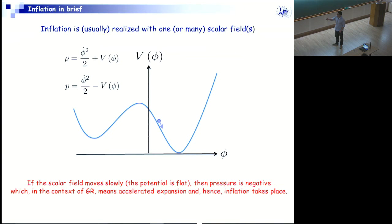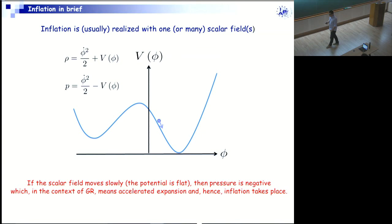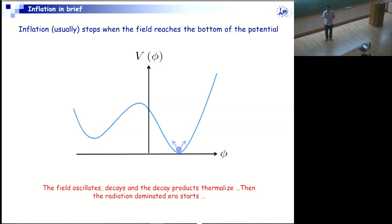Negative pressure in the context of general relativity means accelerated expansion. This is called the slow roll phase. Then you have to stop inflation because we don't want to spoil the successes of the standard model of cosmology. Usually this happens near the ground state of the system — the minimum of the potential. At some point the potential is no longer flat enough to support inflation; it becomes steep near the minimum, the field speeds up, the kinetic energy increases, pressure becomes positive, and inflation stops. The field then oscillates at the bottom of its potential, decays, and the decay products thermalize — this is how you start the radiation-dominated epoch and smoothly connect inflation to the subsequent hot Big Bang model.